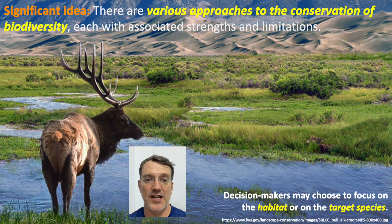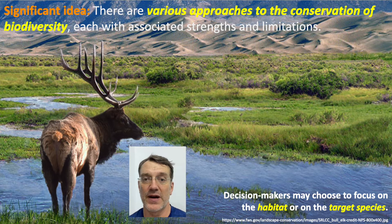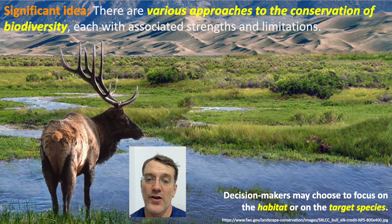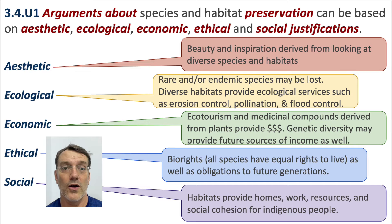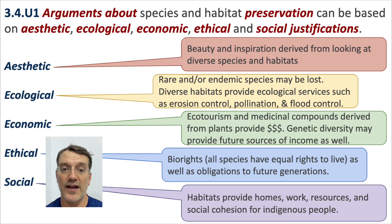The next big idea in ESS Topic 3.4 is that there are differing approaches to the conservation of biodiversity. You're either going to target the habitat or focus on specific species. Arguments about species and habitat preservation can be based on aesthetic, ecological, economic, ethical, and social justifications.